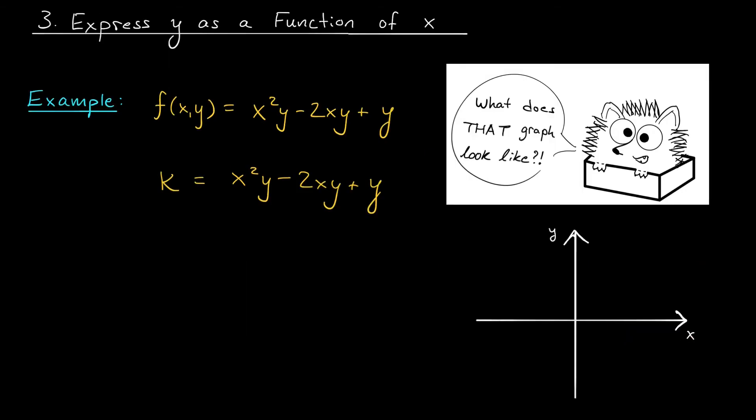In many cases, you won't be able to recognize your level curve as a conic section at all. Take for example, this crazy function. The level curve is k = x²y - 2xy + y. I have no idea what that looks like. Now it might sound simple, but it's really helpful if you can rearrange an expression like this to write y as a function of x. After all, that's typically how we think of curves in R2. In this case, we can factor out a y term from the right hand side to get k = y(x² - 2x + 1).